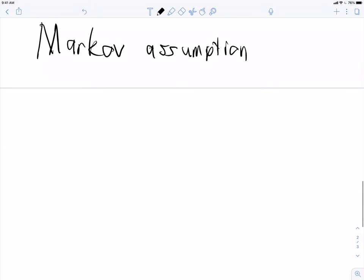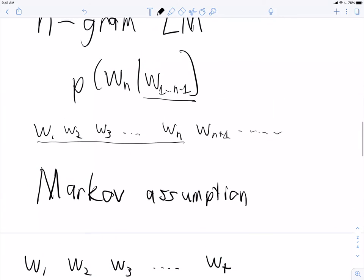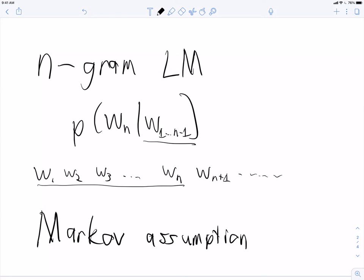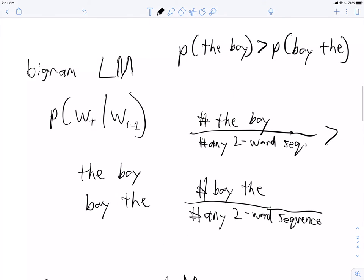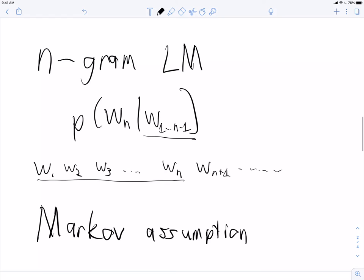So, one important thing to realize in n-gram language models is that n-gram language models make what is called a Markov assumption. So, the Markov assumption says if we have a sequence of words up to t, let's say we have a sequence of t words, that the probability of the sequence can be approximated by looking at only words up to the Markov limit, or the history. So, in a unigram model, the history is 0. In a bigram model, the history is 1. In a trigram model, the history is 2. In an n-gram model, in general, the history is n minus 1.